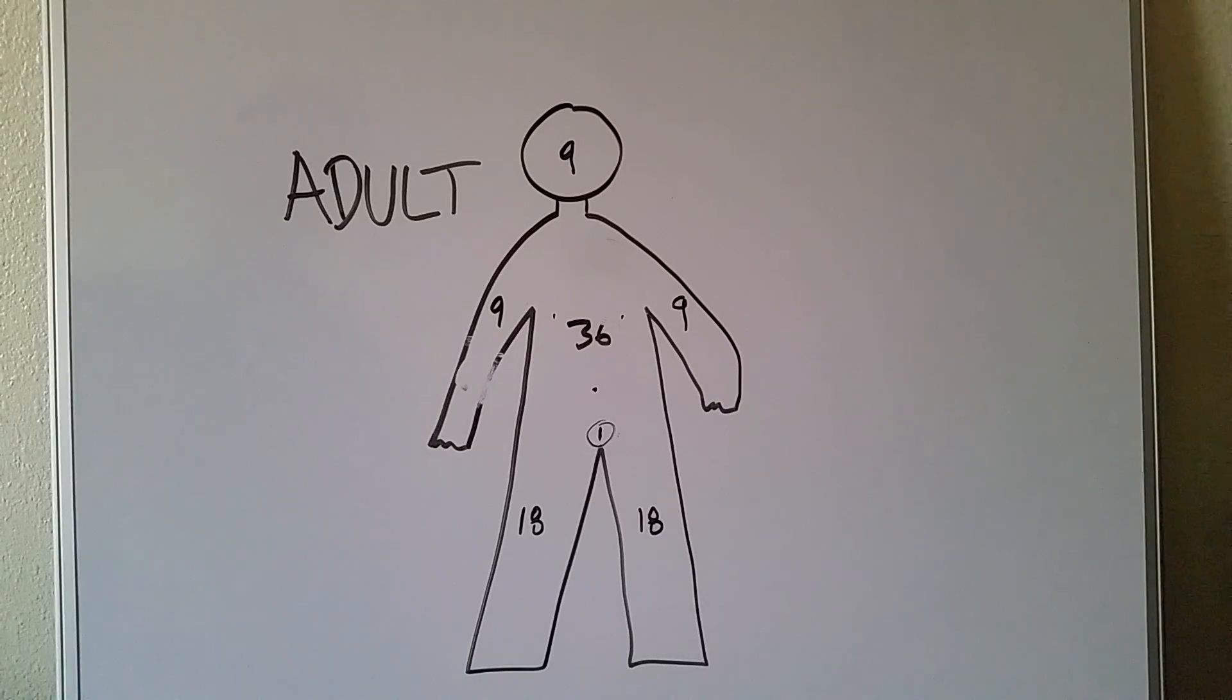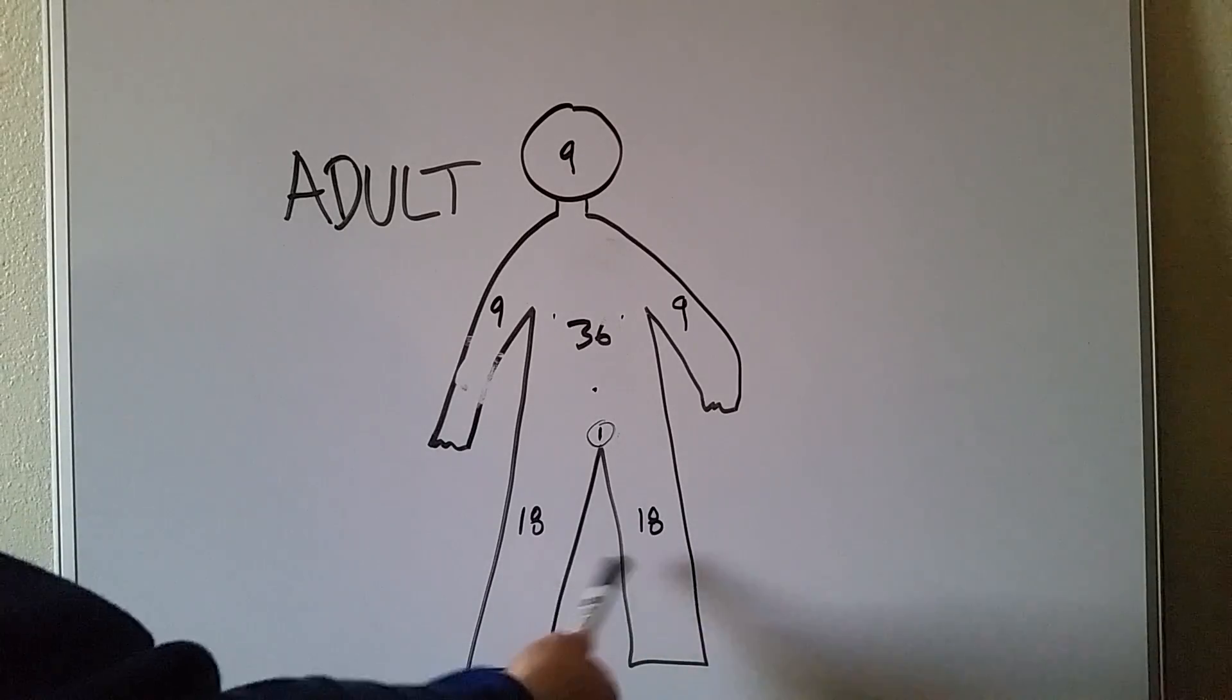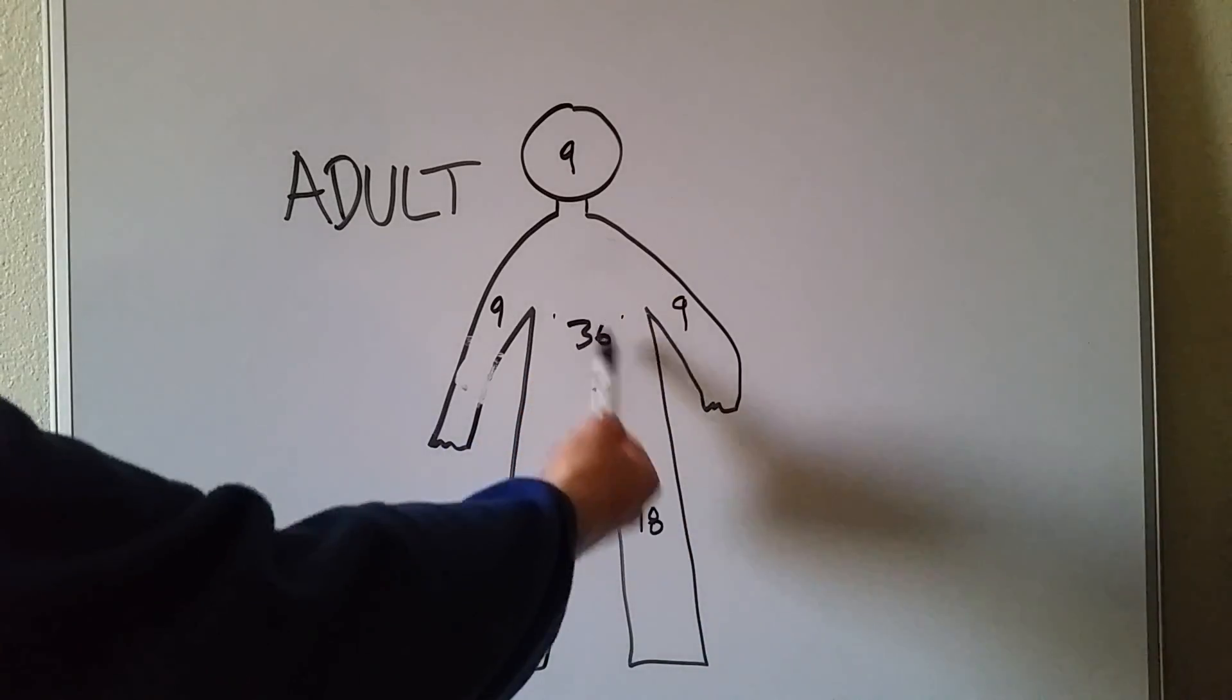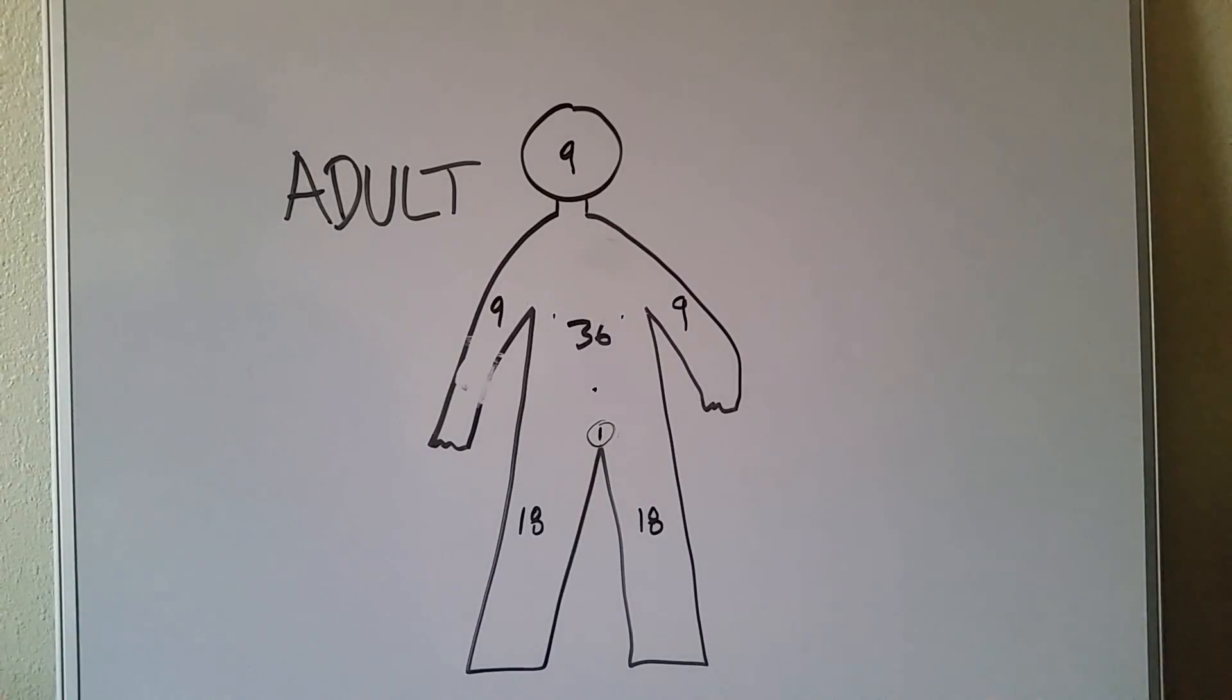So the key is to remember rule of nines. So since nine is in the title, we're going to start with our nines. Multiply by two to get our bigger body parts. Multiply by two to get our biggest body part. The only thing left is a nine for the head. Don't forget the one for the groin. And that's a quick and dirty guide to the rule of nines.